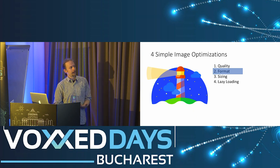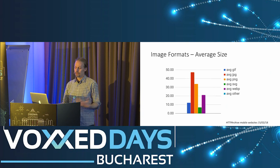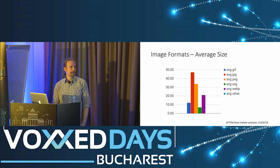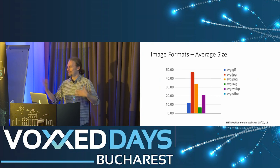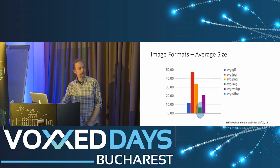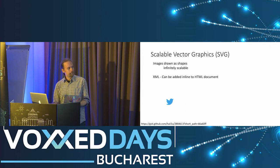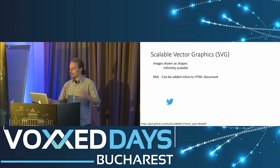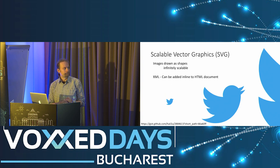The next optimization is format. These images from my phone are all JPEG. JPEG is by far the most popular format on the web. Let's talk about vector graphics quickly, because SVGs are a great way to reduce size for icons. SVGs are shapes — drawn in XML, infinitely scalable, so the Twitter icon looks the same no matter how big you stretch it. Because it's XML, you can add it inline to your HTML.